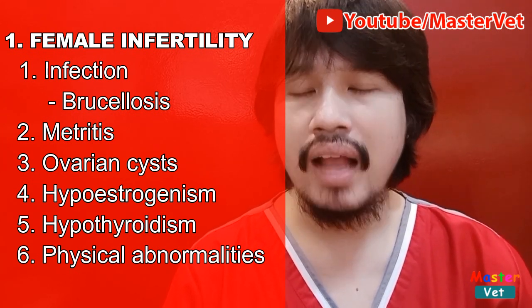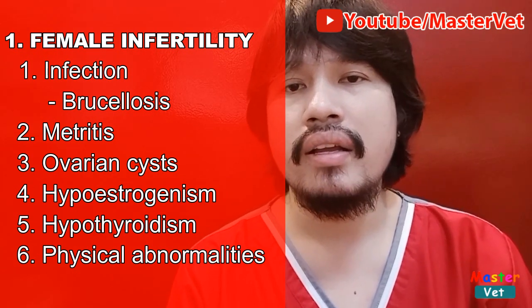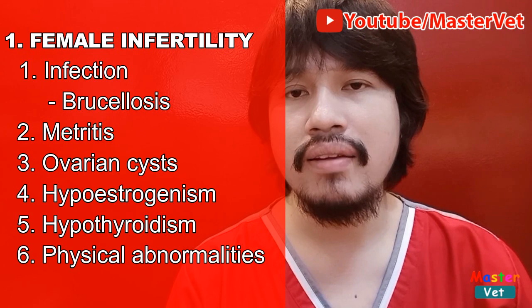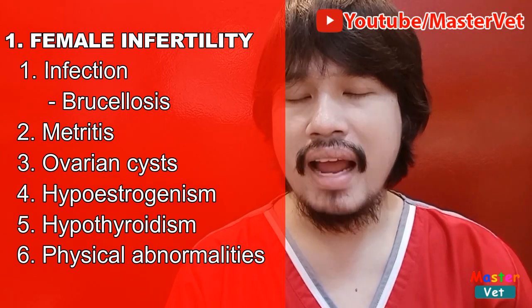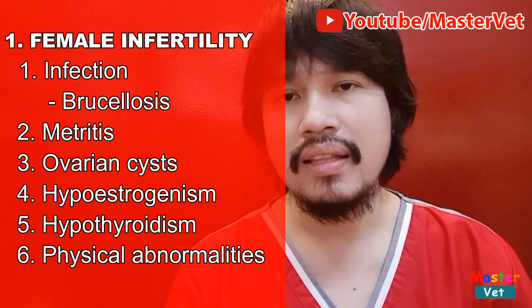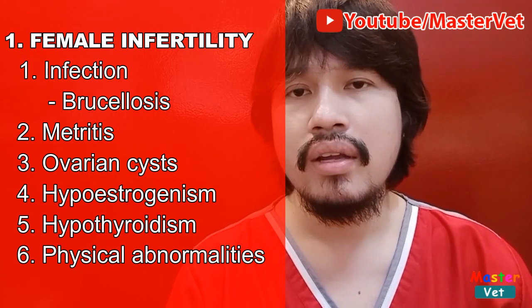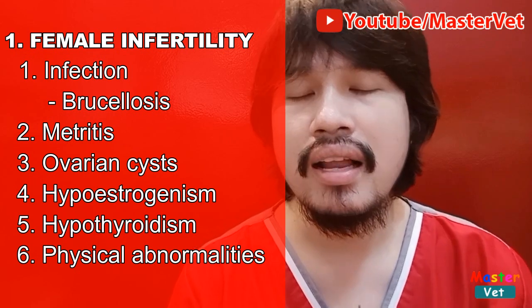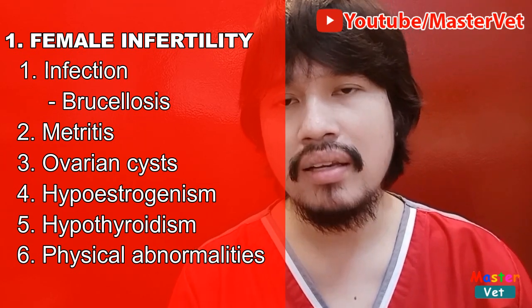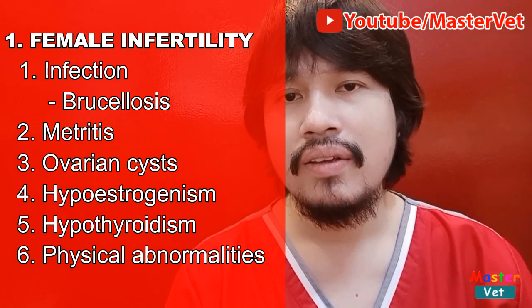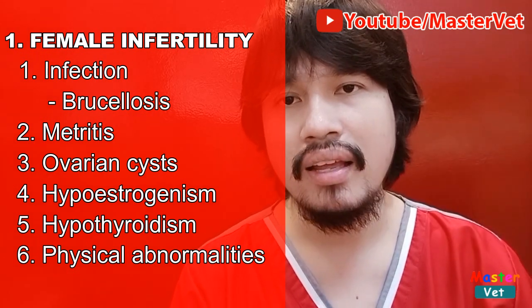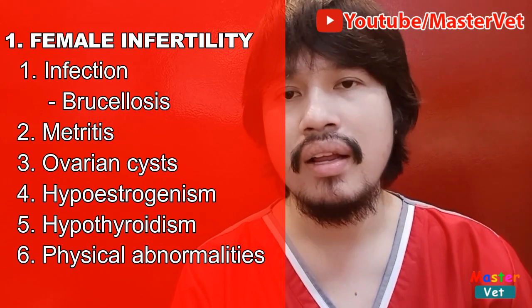Hypothyroidism — nakakaroon ng abnormal ovulation, so magkukos ito ng infertility doon sa babaeng aso. Hypoestrogenism, kung saan yung ovaries ay maliit, kaya yung production ng estrogen naapektuhan — mababa yung production ng estrogen, at nakikita natin na yung female dog hindi siya naghihing. And physical abnormalities kapag yung vagina is narrow — during mating ng female dog at yung male dog, nasasaktan yung babaeng aso, so inaaway niya yung lalaking aso at ayaw niyang magpasampa.